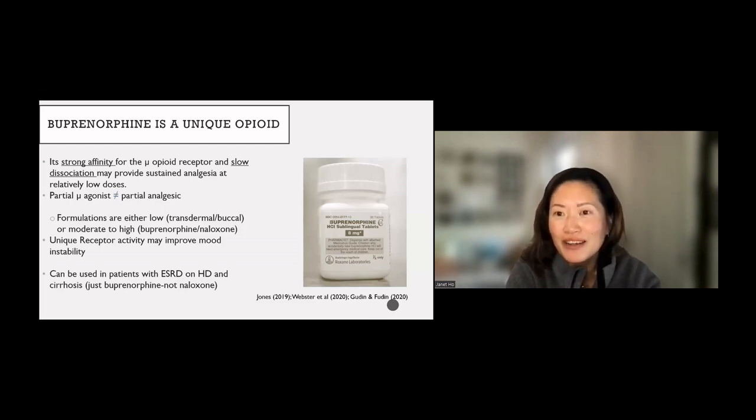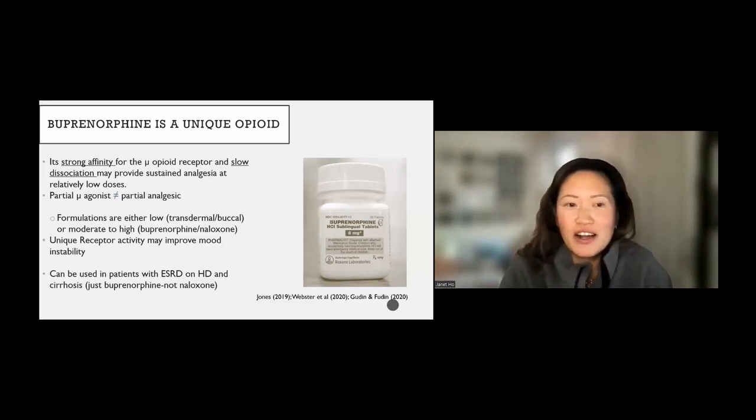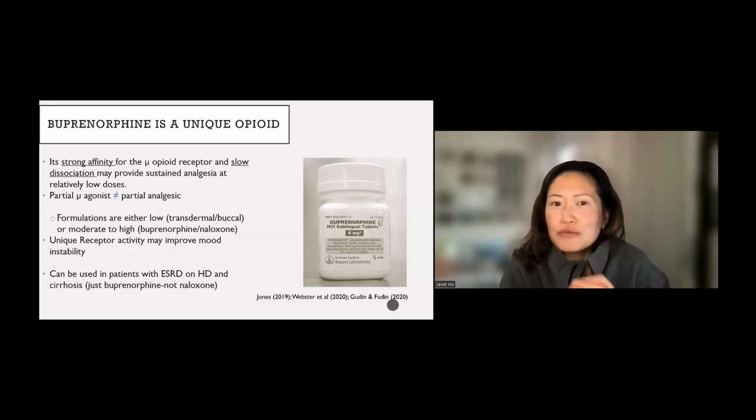So to start out, buprenorphine is a unique opioid. It is a Schedule 3 opioid. And it's different from every other opioid in your toolbox. And the things that make it different are, one, that it has a strong affinity to the mu opioid receptor with a slow dissociation. So essentially, it's a strong binder. And what's on, it's on for quite a while. The half-life is somewhere around two to three days.